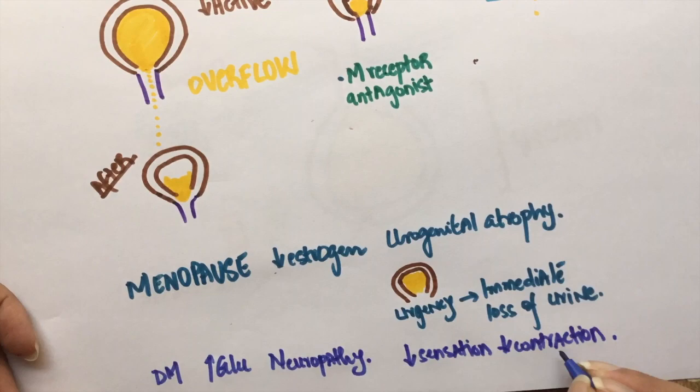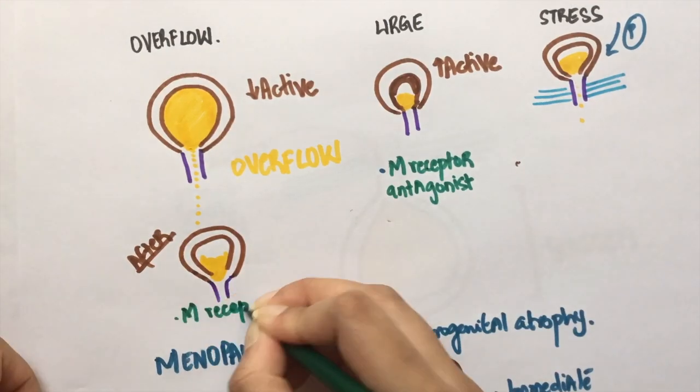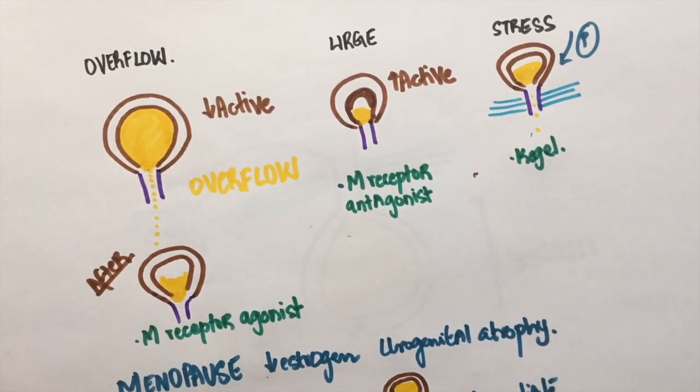Hence, these patients are likely to have overflow incontinence. In overflow incontinence, the bladder is less active, so we provide M-receptor agonists to manage this. Oxybutynin is an anti-muscarinic agent. It is used to treat urge incontinence. Kegel exercises are used to treat stress incontinence by strengthening the pelvic floor muscles.